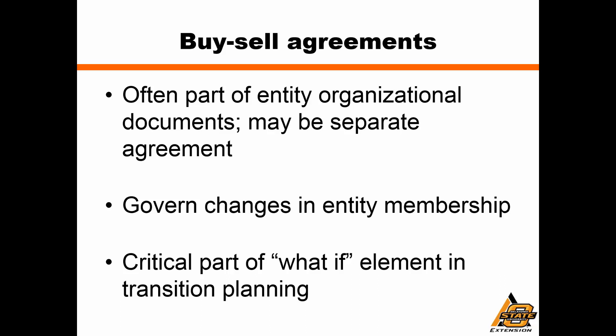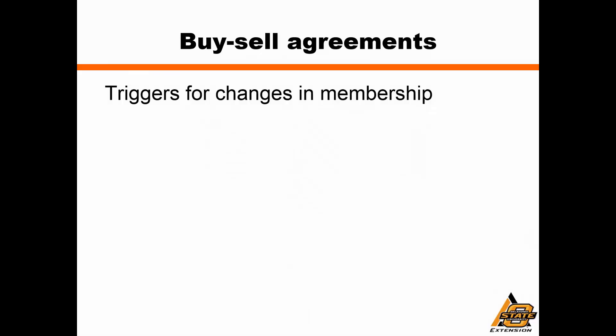Buy-sell agreements have a large role to play in the what-if part of transition planning because it's almost impossible for us to know everything that's going to happen with the people that are stakeholders in a farm or ranch entity. We need a tool available so that if someone wants to leave or enter the entity, we have an organized way of figuring out how that can happen and provisions governing when that should happen. There might be several triggers that mark a change in membership, and obviously one we think about a lot in transition planning is death.